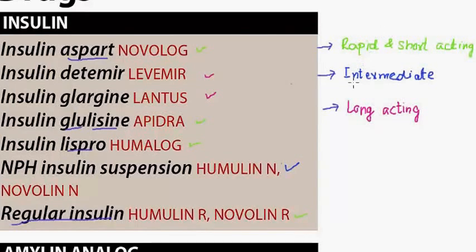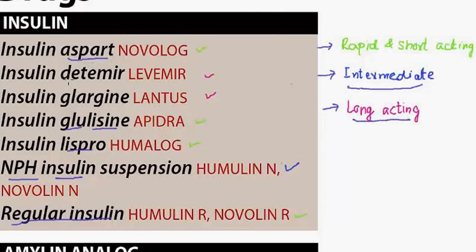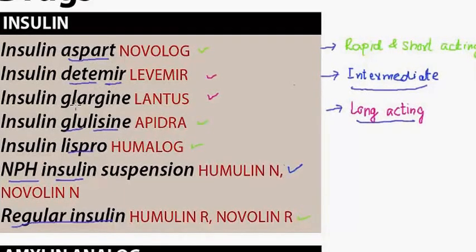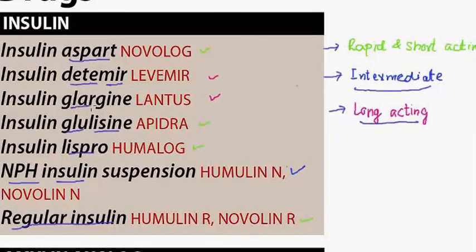In the intermediate-acting insulins we have just one, and that is NPH insulin, where NPH stands for neutral-protamine Hagedorn. And in the long-acting insulins we have two, which are insulin detemir and insulin glargine.